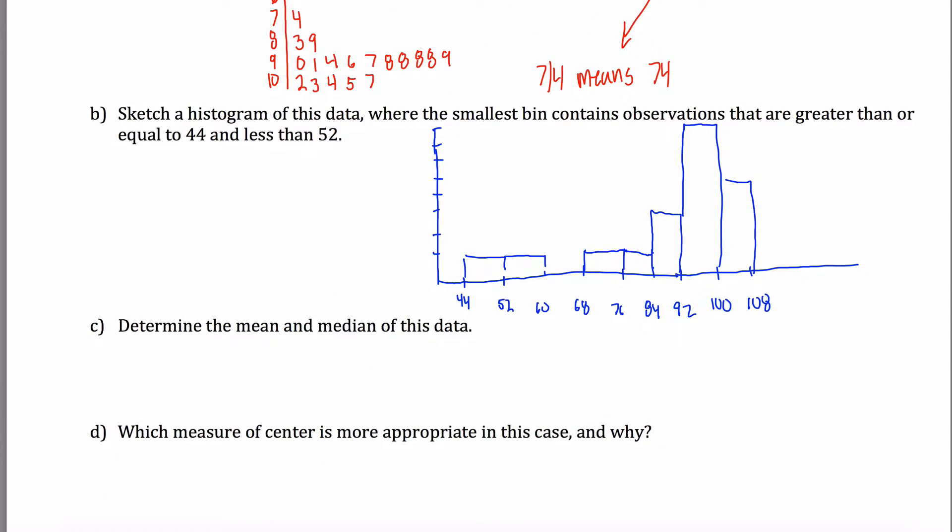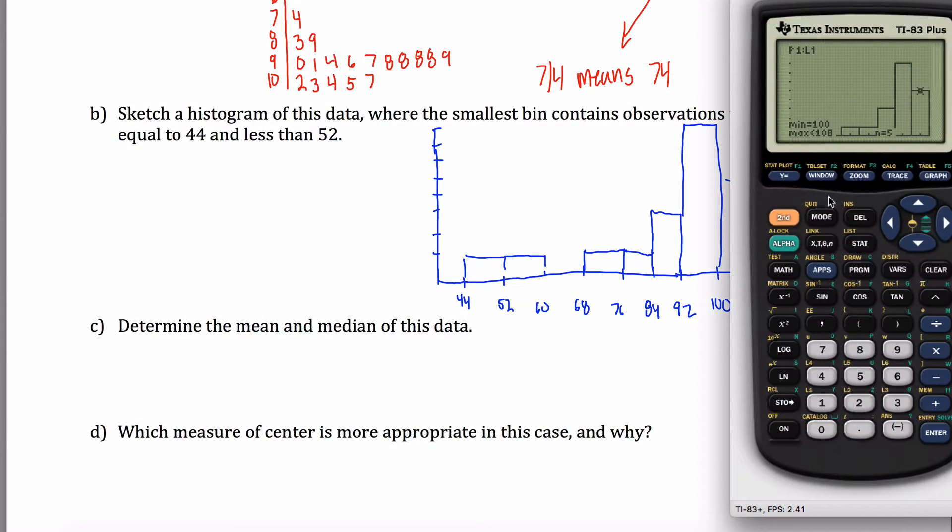Determine the mean and median of this data. Sure. Since I already have the data in my calculator, all I have to do is hit the stat key and then go over to calc. Mean and median both come out of one variable statistics, which is the first thing in this list here. So I'll hit enter. One variable statistics. Yeah, but where's your data? Well, my data's in L1. So I'll hit second and one to get L1 in there. It turns out that if you don't put any list in, it'll default you out to L1, so I didn't have to do that. But just in case your data was in L2 and you're following along, I wanted to do that.